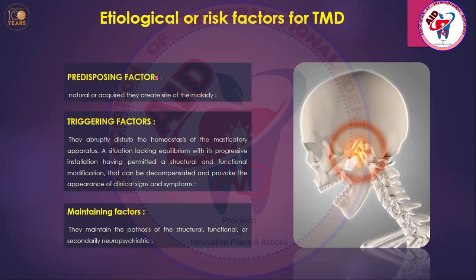Once TMD has occurred, it will persist for a longer time if you do not address the maintaining factors. These maintaining factors — which may be structural, functional, or neuropsychiatric — must be stopped and addressed. Habits like pencil biting, thumb sucking, wide mouth opening, and jaw deviation all give trauma to the condylar area through unwanted maneuvers, leading to the maintenance of the TMJ disorder long-term.